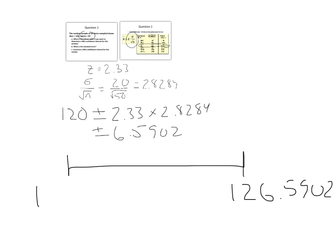And on the lower limit we have 113.4098. That is our confidence interval estimate with 120 right in the middle. This means that with 98 percent confidence we can say for a sample of this size the true population mean is somewhere between 113.4098 and 126.5902.